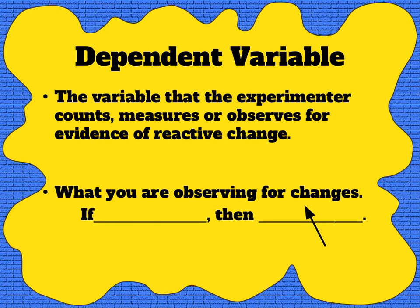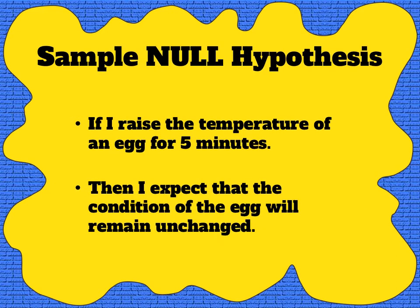The dependent variable is the variable that needs to be measured, counted, or observed. We're looking for what changes have happened as a result of the experiment, and these are found in the 'then' statement — they are actually what we predicted in our hypothesis. We can actually have more than one dependent variable in a controlled experiment. In this hypothesis I can see that I'm going to be observing the condition of the egg, and this is my dependent variable.